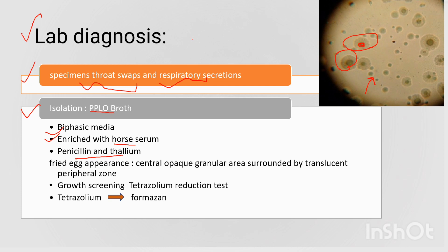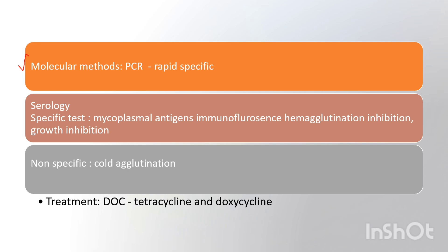Microorganism growth is confirmed using the tetrazolium reduction test — Mycoplasma converts colorless tetrazolium to red-colored formazan. Molecular methods such as PCR are rapid and specific. Serology includes specific tests such as growth inhibition test, immunofluorescence test, and agglutination inhibition test. Non-specific tests include the cold agglutination test, as the organism is beta-hemolytic.